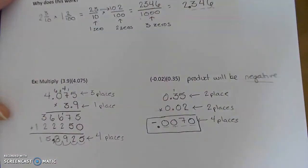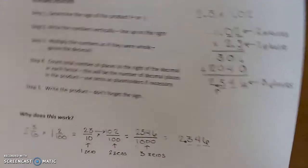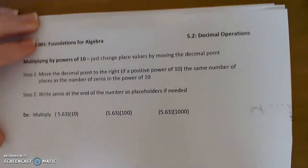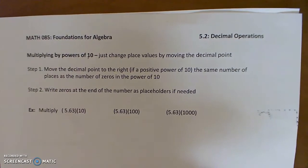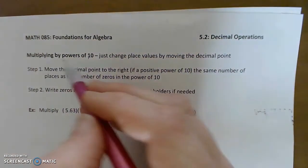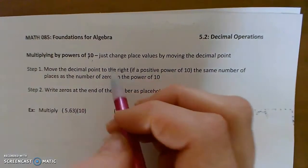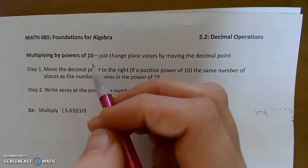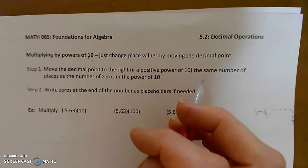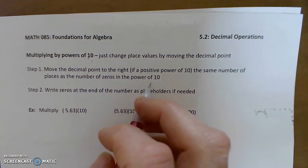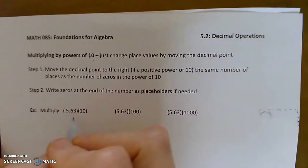I also want to equip you with some shortcuts for multiplying by powers of 10. Because we have a base-10 number system, all our place values are powers of 10. To multiply by a power of 10, you're just changing the place values of your numbers — you can do that by moving the decimal point. For positive powers of 10, like times 10, 100, or 1,000, you move the decimal point to the right the same number of places as the number of zeros in the power of 10.